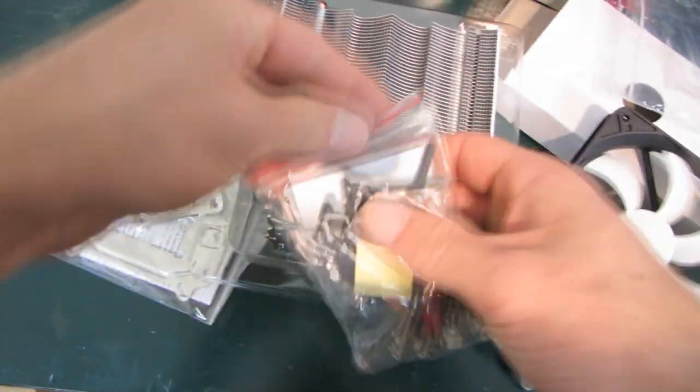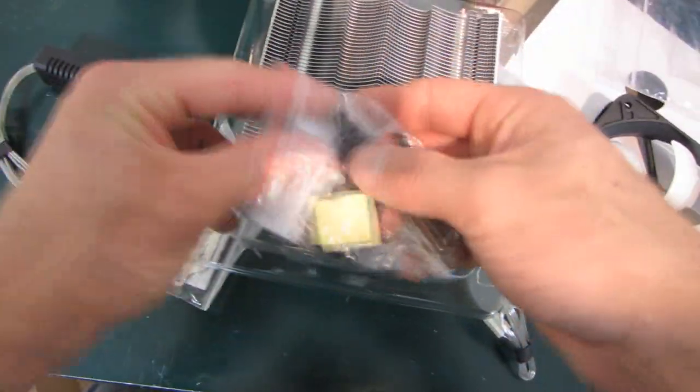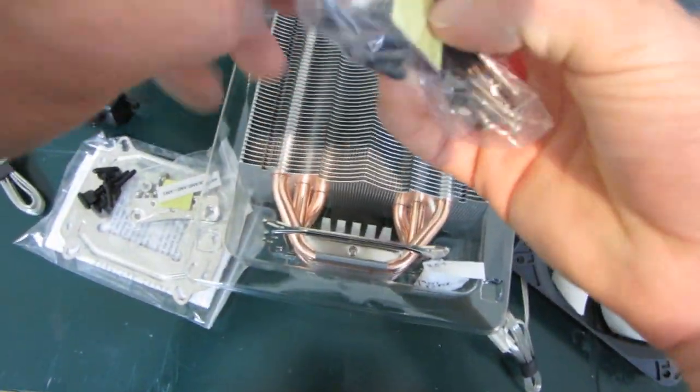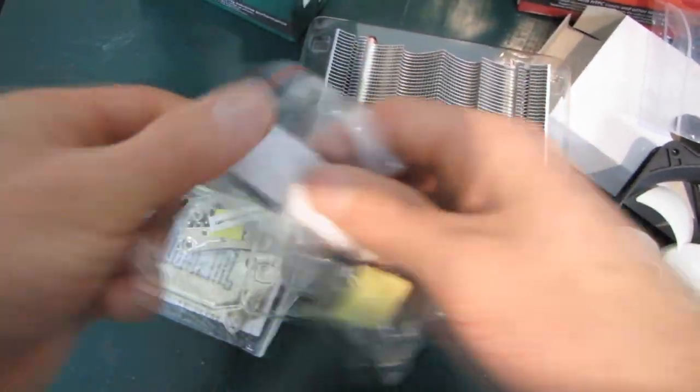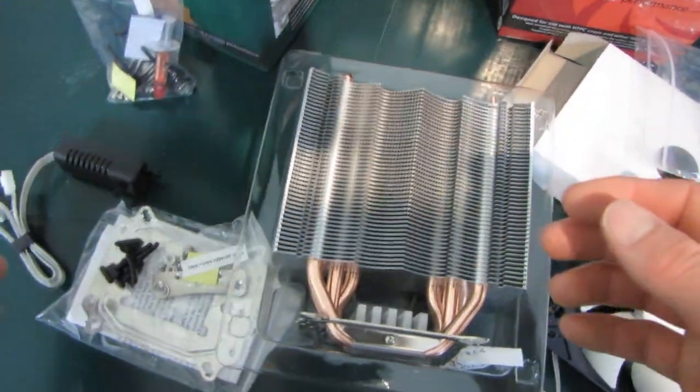There are two sets of fan grommets in this one. In the compact, the fan was mounted for me already. So I'm going to have to figure out how to mount the fan on camera here for you. That should be quite an ordeal. Here's a little double-sided Velcro thing to mount your fan controller somewhere in your case.